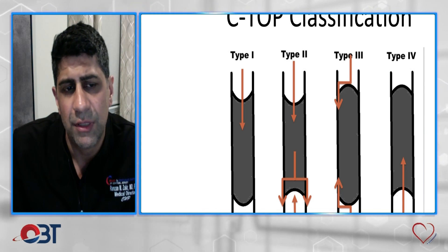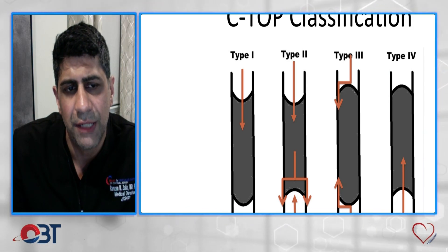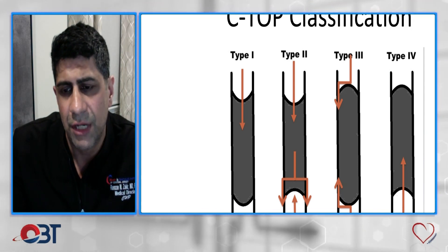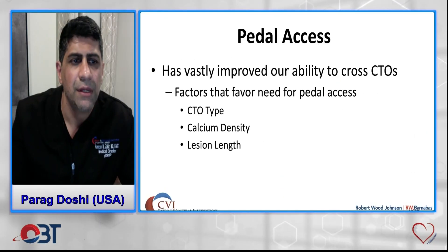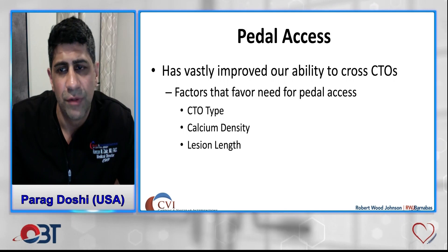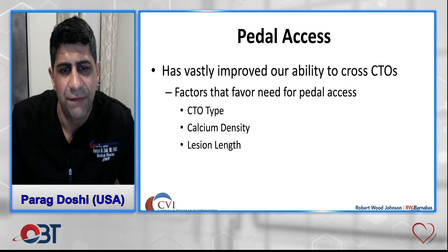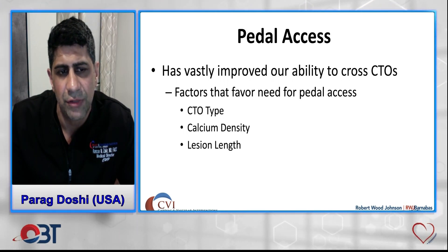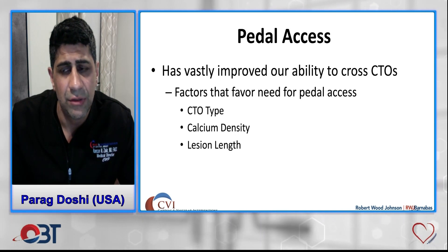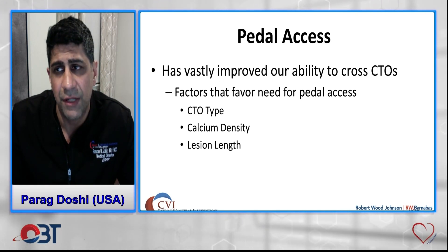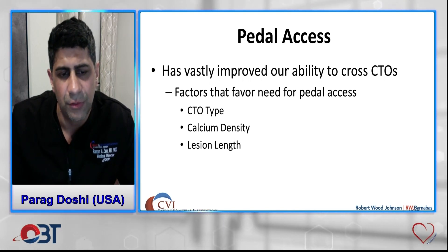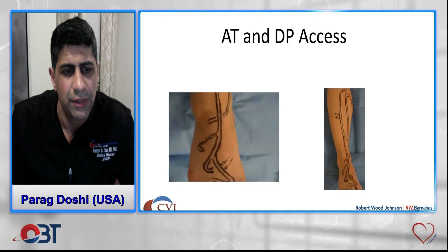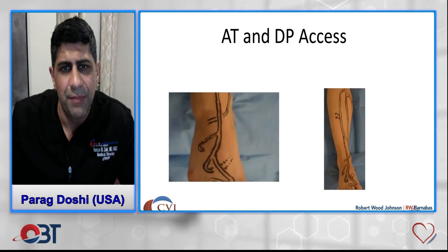A type one CTO may be successfully crossed antegrade, but the other types will most likely require retrograde access. Pedal access has vastly improved our ability to cross CTOs. Factors favoring the need for pedal access include the CTO type, heavy calcification, and lesion length greater than 100 millimeters — all of which make antegrade failure more likely.